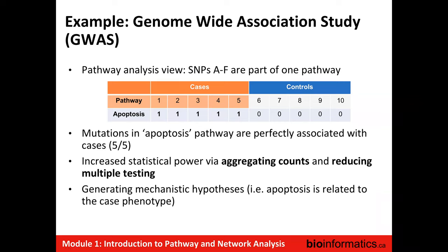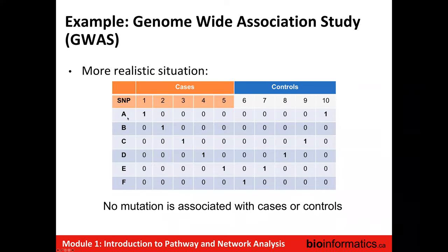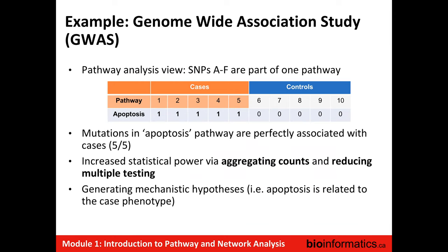So what happened here? We were able to increase our statistical power by doing two things. One is aggregating the counts — we took all of these individual counts and combined them into one count, making the signal stronger. The second thing is that with six SNPs we have to do six tests, and there's a chance that a test can look significant by chance, requiring multiple testing correction. When we move to the pathway level, there's only one test. So we don't have to correct as much when working in the space of pathways, because there are typically fewer pathways than genes or SNPs.